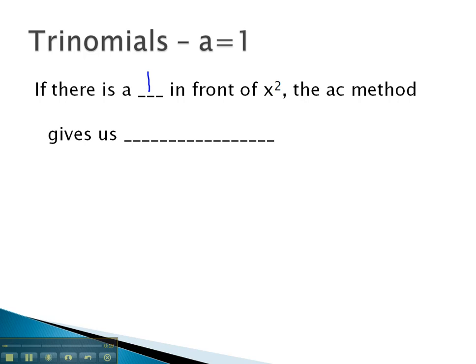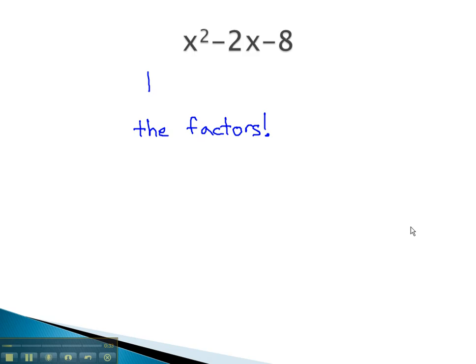The AC method gives us the factors directly without nearly as much guess and check. For example, on the problem x squared minus 2x minus 8, notice we have no number, or technically a 1, as the coefficient in front of the x squared.